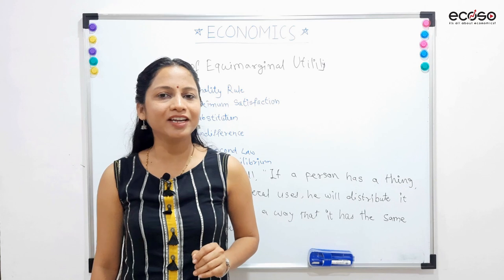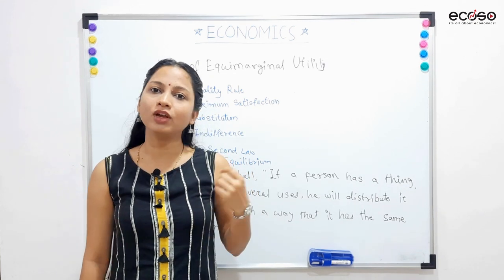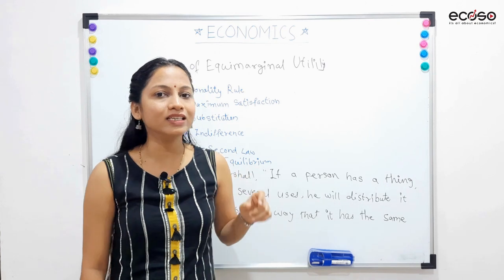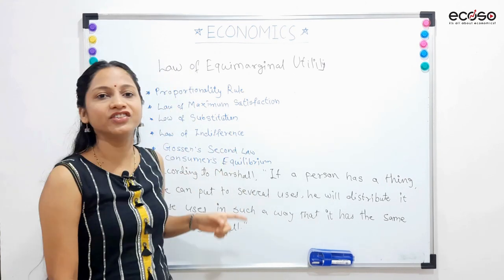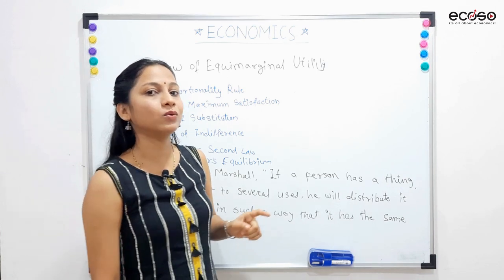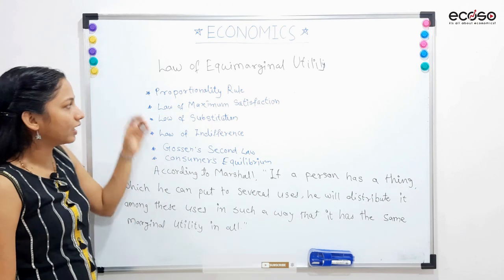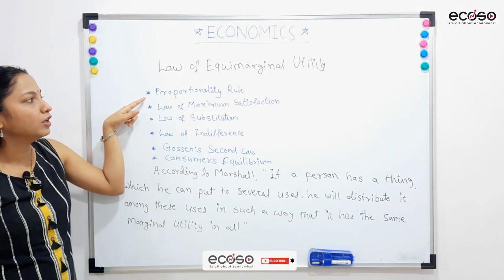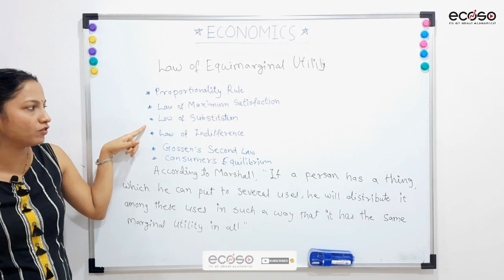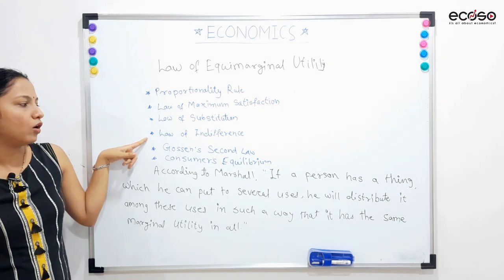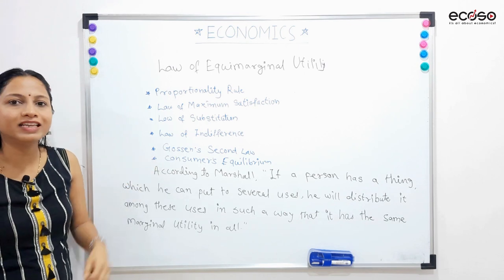Law of Equimarginal Utility ke bahut sare alternative names bhi hai, aur aapko competitive exam ho ya koi other exam ho, uske liye ye sare names achhe se yaad rakhne hai. Kyunki exam mein ye koi bhi naam se question aa sakta hai. Kya naam se dekhte hai? Proportionality rule, law of maximum satisfaction, law of substitution, law of indifference, Gossen's second law, and consumer's equilibrium.